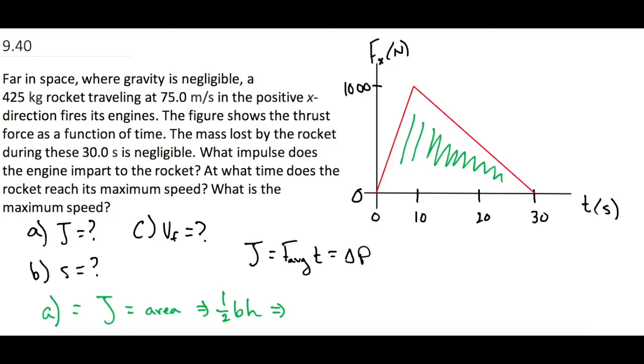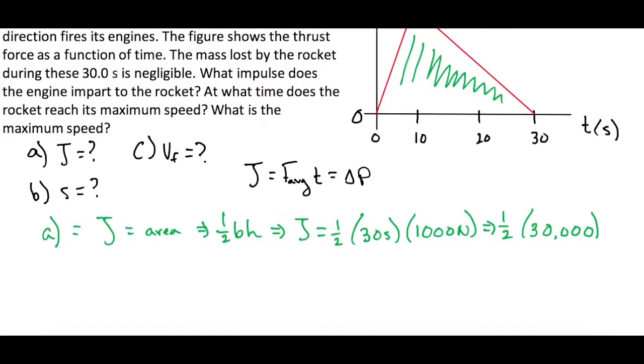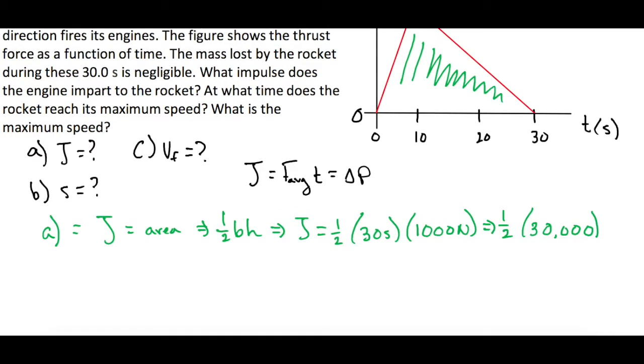The area of a triangle is one-half the base times the height. J equals one-half times the base, which is 30 seconds, times the height, which is 1000 newtons. So one-half times 30,000 newton seconds gives us the impulse. One-half of 30,000 is 15,000, so J for part A is 15,000 newton seconds.